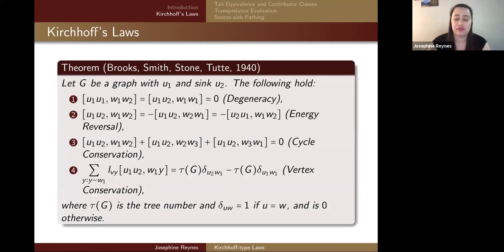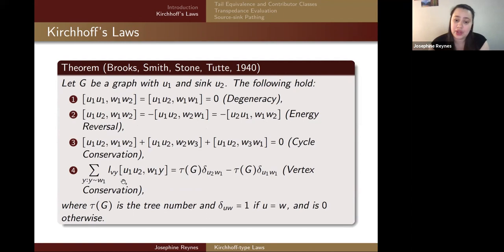They decided that their versions of transpedances followed four rules. Degeneracy holds: if you put U1 or the W's in the same component, you get zero. If you swap the order of the U's or W's, you reverse the flow of energy and negate the transpedance value. If you sum around a cycle, you get zero — shown for length three but extendable to any length. Finally, if you sum around a vertex star, you get zero if you are not the source or sink; if you are the source or sink, you get the tree number.